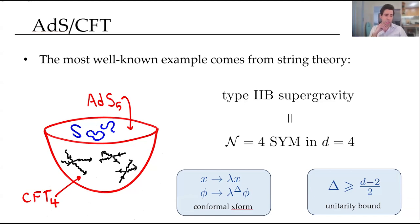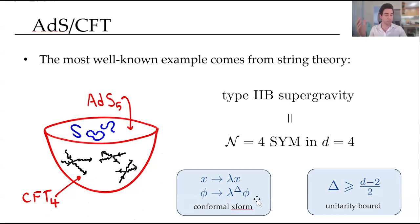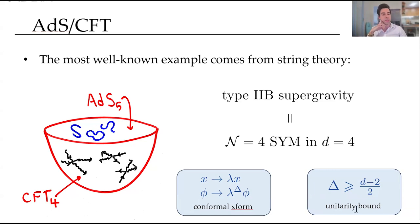CFTs have some unique properties: they have a vanishing one-point function, the form of the two-point function is completely fixed by conformal symmetry, and the three-point function is fixed up to some coefficients which form the operator product expansion — from there you can determine the rest of the correlation functions. CFTs are a special type of field theory which are highly constrained; they're scale invariant and arise generically near quantum critical points as a UV fixed point of an ordinary quantum field theory. If you have a rescaling of some coordinate X, then your scalar field will rescale like lambda to the delta, where delta is the scaling dimension of that operator, and there is a unitarity bound requiring delta greater than (d-2)/2.